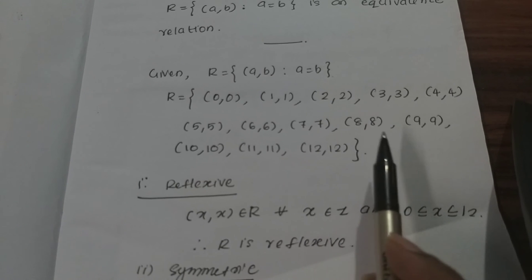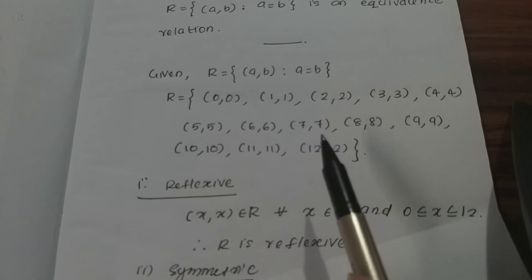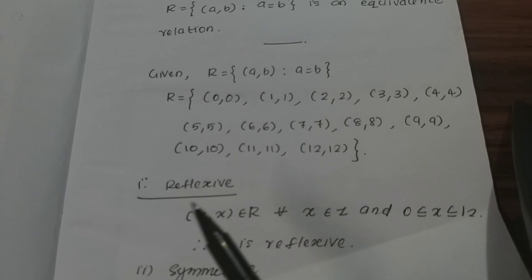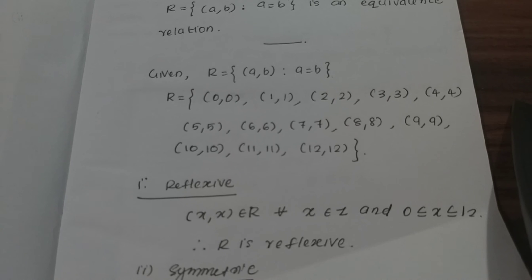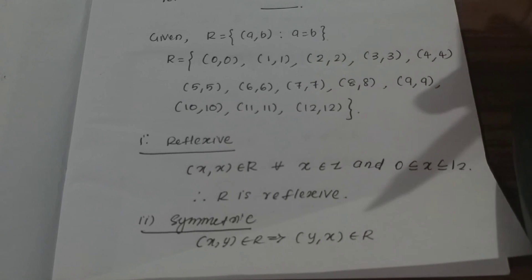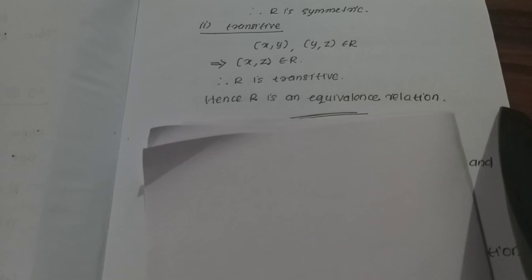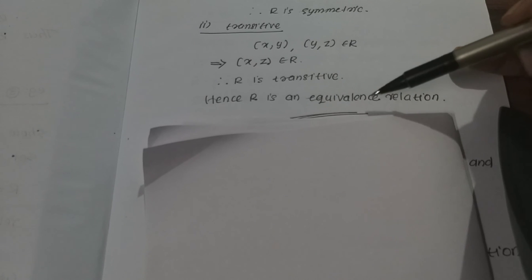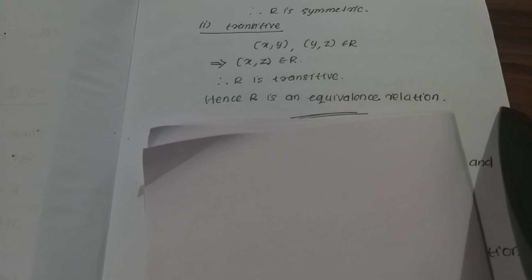For symmetric: if we have a pair like (4, 5), then we also have (5, 4). So (x, y) belongs to R implies (y, x) belongs to R. For transitive: similarly, the transitive condition is satisfied. Therefore, since R is reflexive, symmetric, and transitive, R is an equivalence relation.